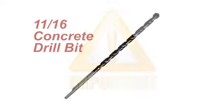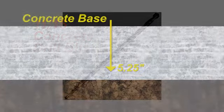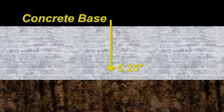First, drill the two outer anchor holes with an 11 sixteenths diameter concrete bit. The depth of the hole should be five and a quarter inches.